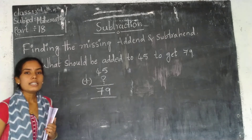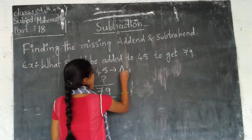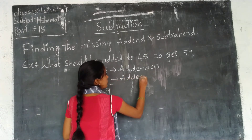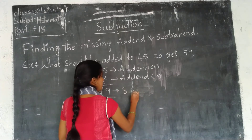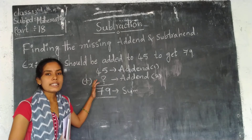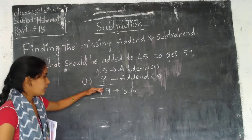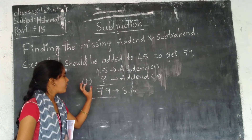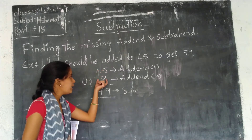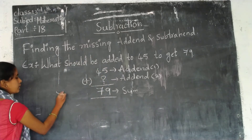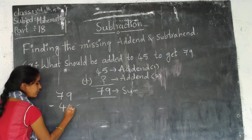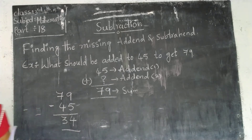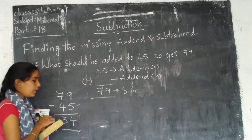We already know the subtraction checking formula: minuend equals difference plus subtrahend. In the same way, to find the missing addend, we subtract the known addend from the sum. So 79 minus 45: 9 minus 5 is 4, and 7 minus 4 is 3. So our answer — the missing addend — is 34.